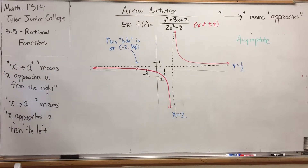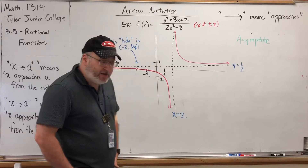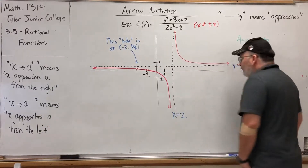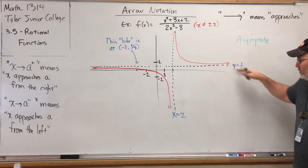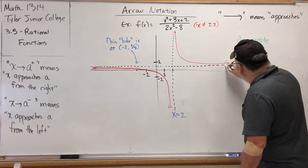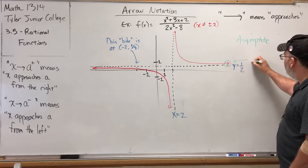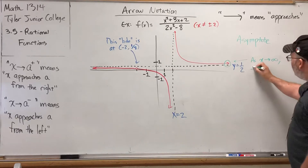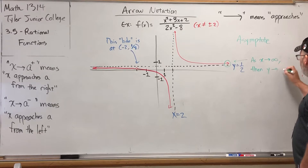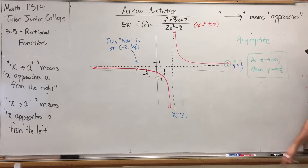We have the graph — a visual representation of everything we said in the previous video, because we said four things about the behavior of this graph. Thing number one: remember when the x's got larger and larger, our y values were settling down to what looked like 1/2. This arrow at the end of the graph can be interpreted using arrow notation as: as x approaches infinity, y is approaching 1/2. The further out we go, the closer the y values get to 1/2.